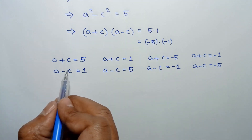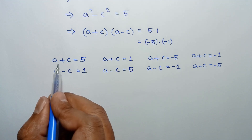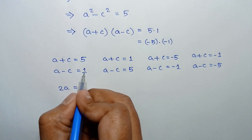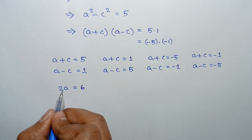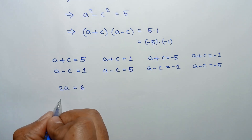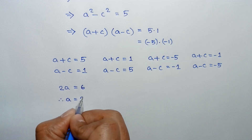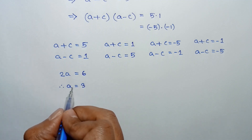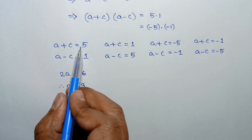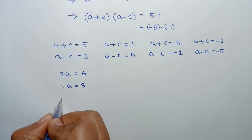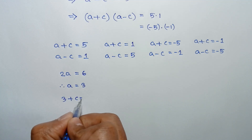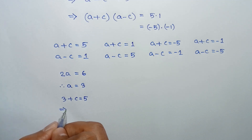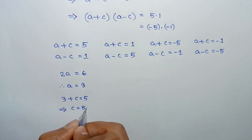For Case 1, adding a plus c equals 5 and a minus c equals 1: the c terms cancel, giving 2a equals 6, so a equals 3. Substituting a equals 3 into a plus c equals 5, we get c equals 5 minus 3, so c equals 2.